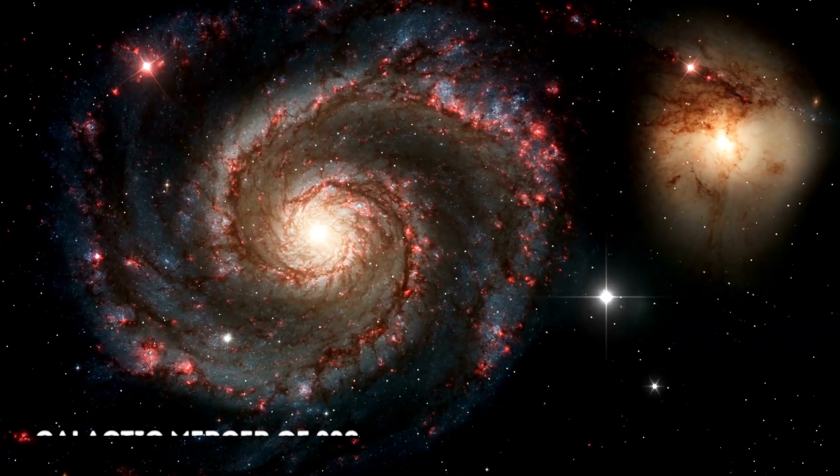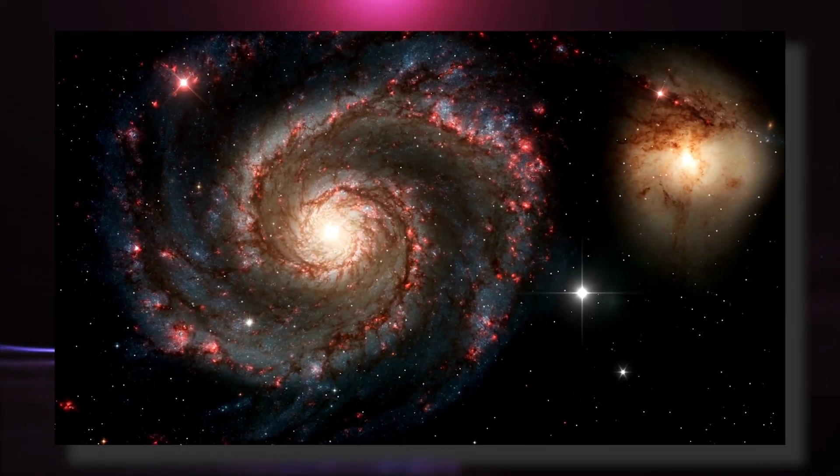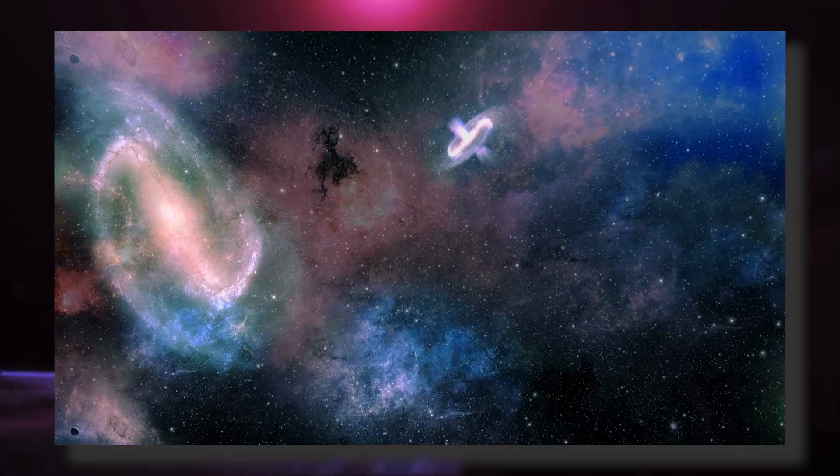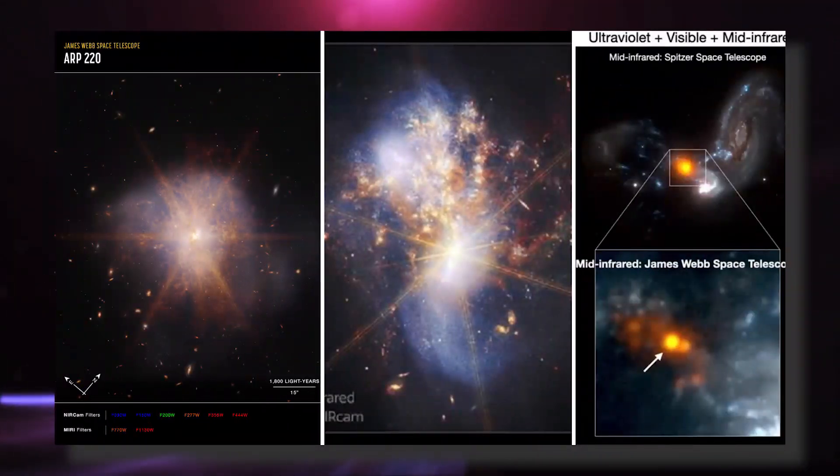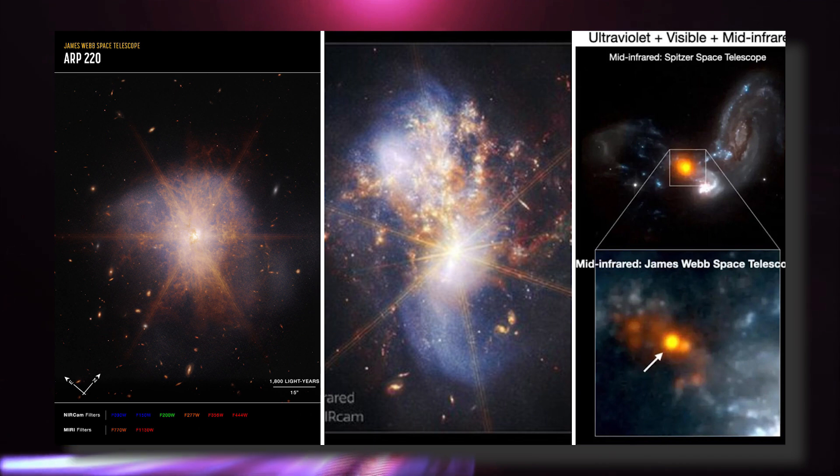NASA has made an exciting announcement about the galactic merger ARP 220, which was captured by the James Webb Space Telescope. This impressive galactic merger can be seen shining among other galaxies in the night sky. When two spiral galaxies merge, the phenomenon known as ARP 220 shines brightest in the infrared, making it perfect for observation by the James Webb Space Telescope.